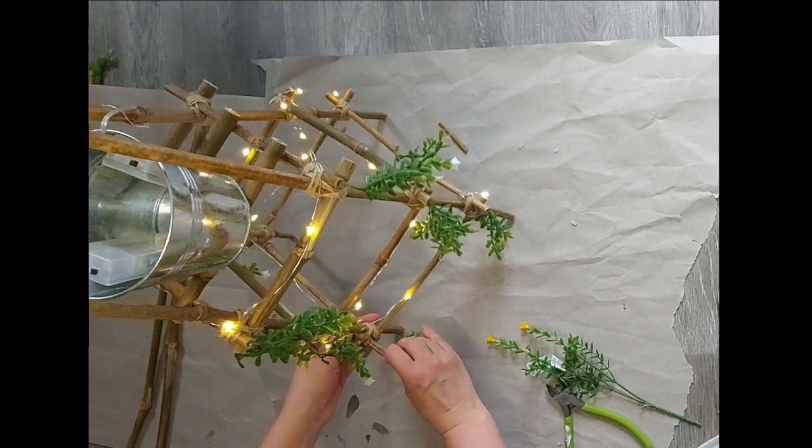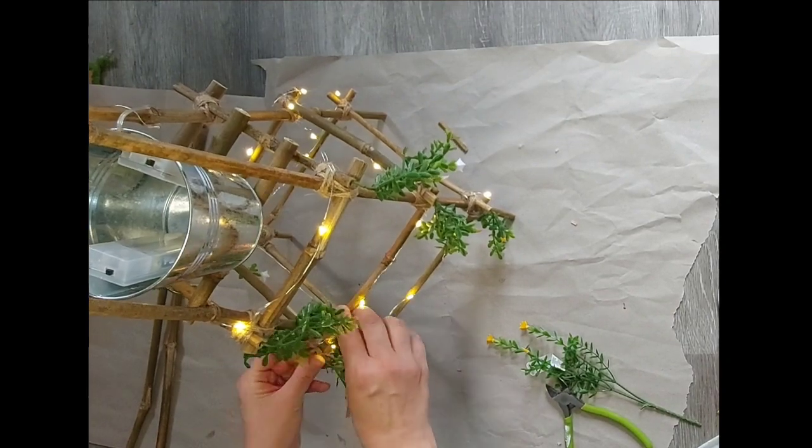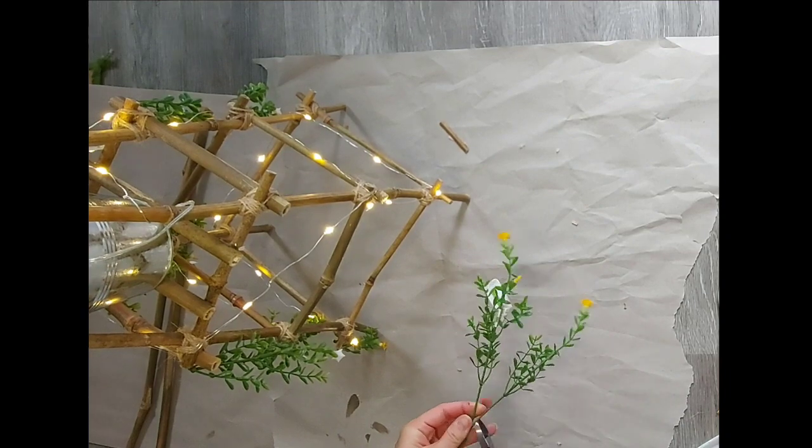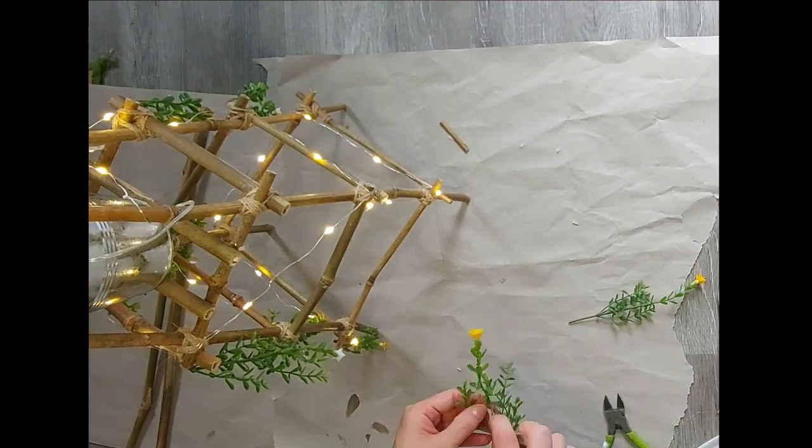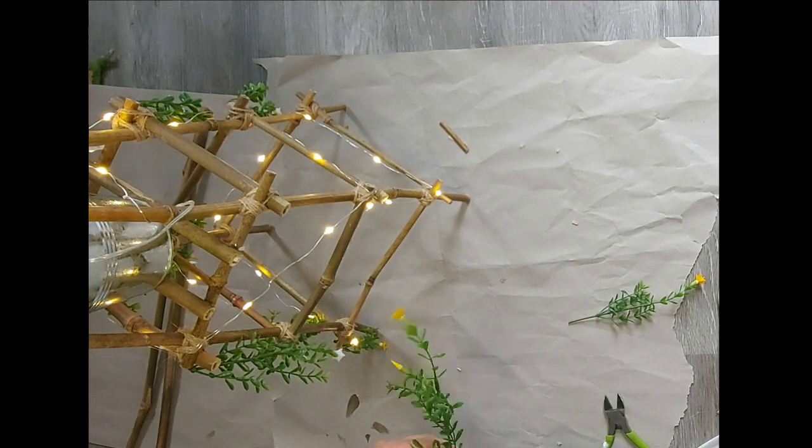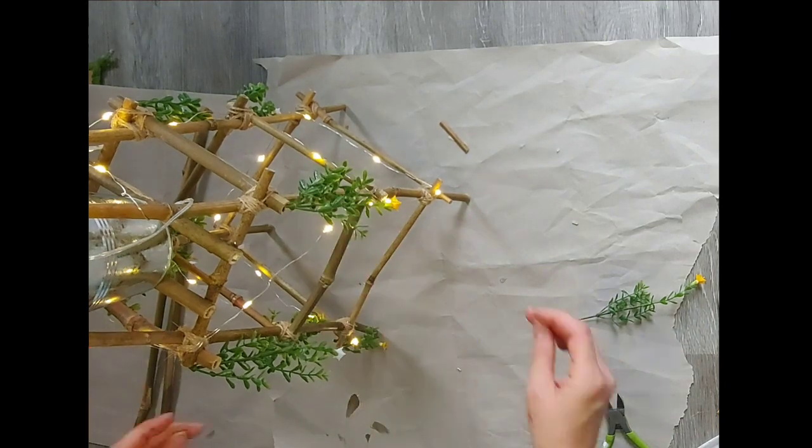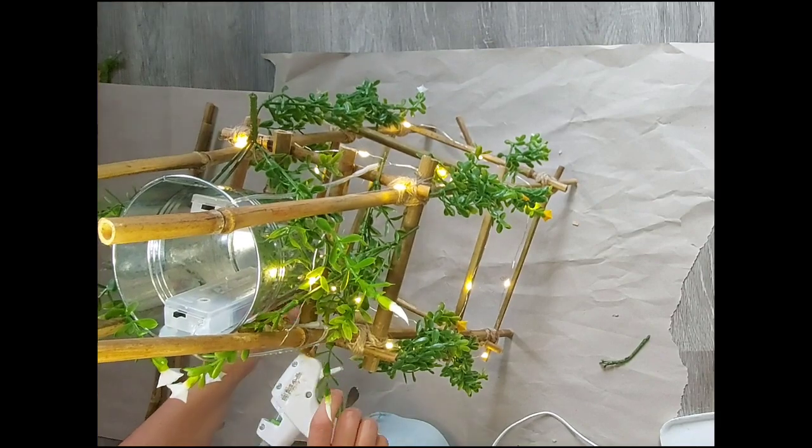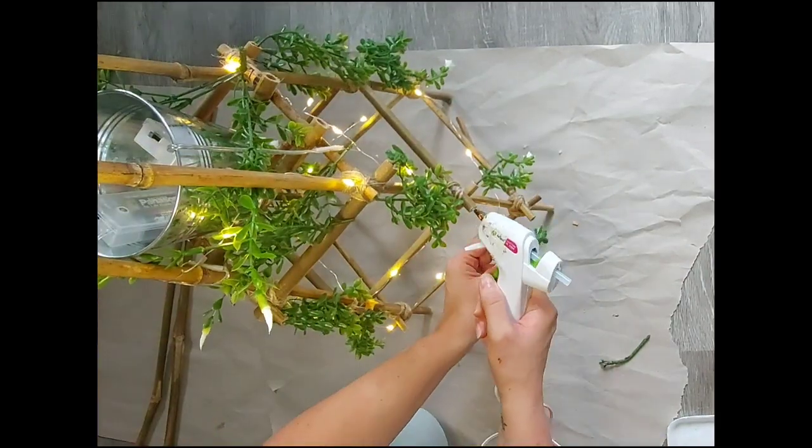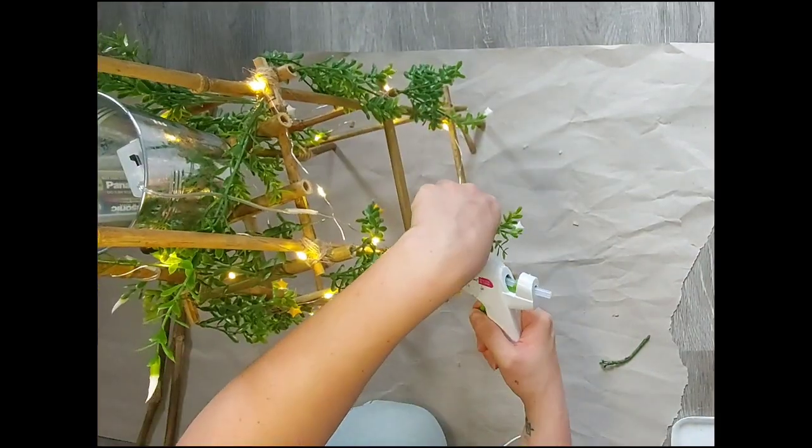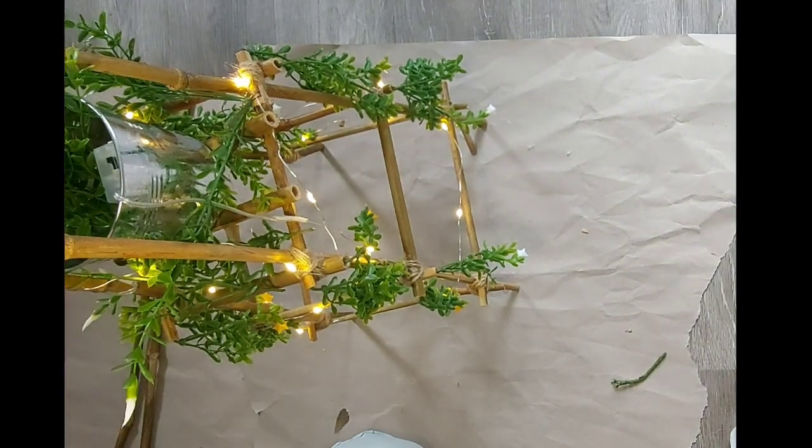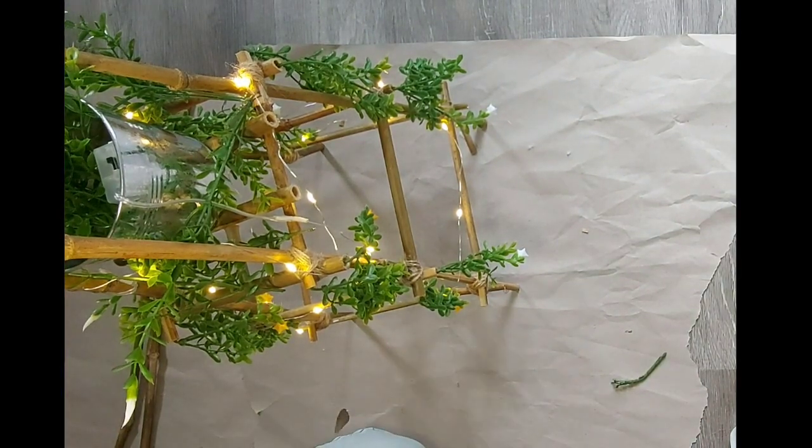Then I cut apart some greenery florals from Michaels and found that I was able to stick them into the ends of the bamboo sticks. After I was happy with where they were all placed I went back with some hot glue and just held them in place with a small dab of hot glue. Then I put two of the bushels of greenery into the top of the bucket again to kind of disguise and hide the battery packs and that was it for this DIY.